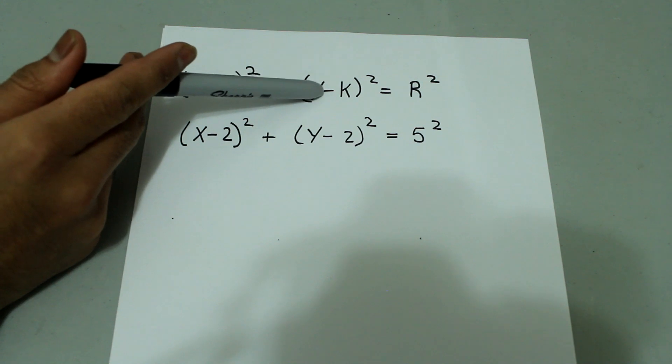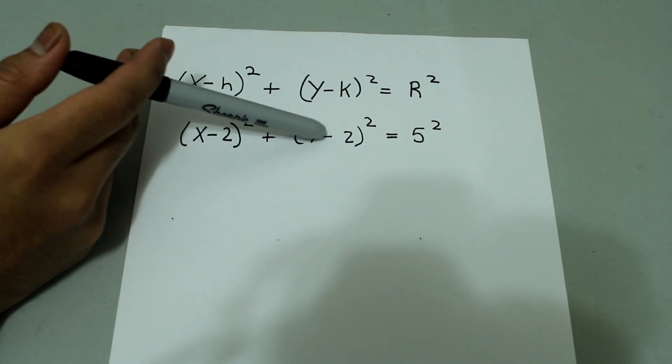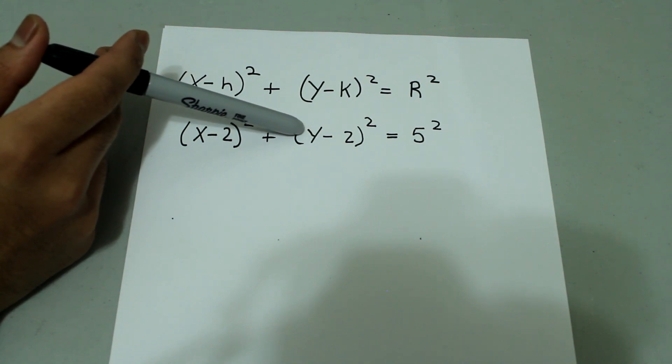And here also there is a minus sign so we have y minus 2 that means you are moving 2 units up from the origin.